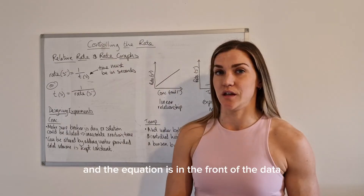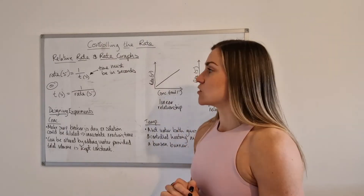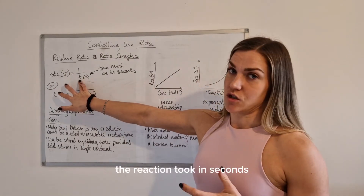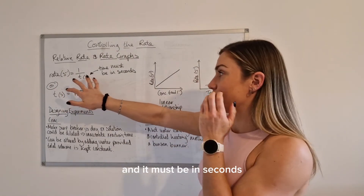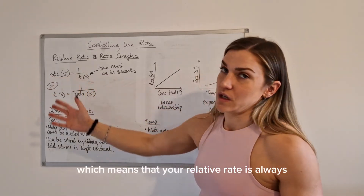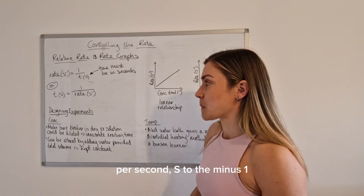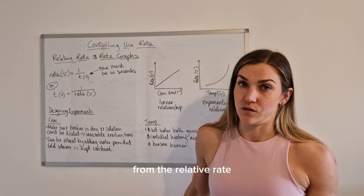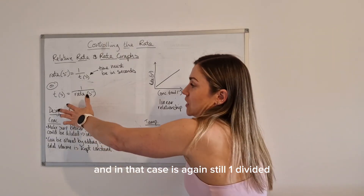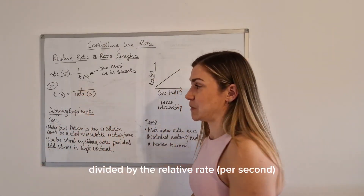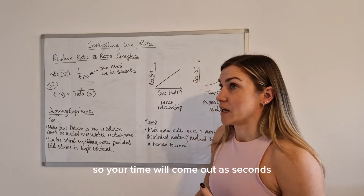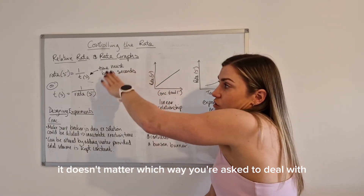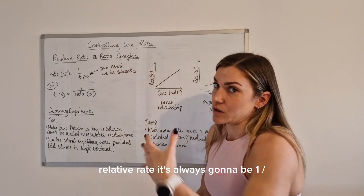Now let's look at relative rate calculations. The equation is in the front of the data booklet. To work out the relative rate, you do one divided by the time the reaction took in seconds — it must be in seconds — which means the relative rate is always per second (s⁻¹). If you're asked to calculate the reaction time from the relative rate, it's one divided by the relative rate per second, so your time comes out in seconds. It's always one divided by whatever number you're given.